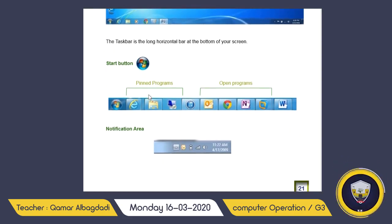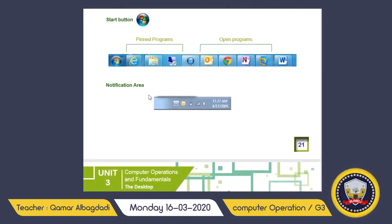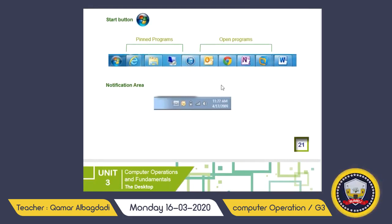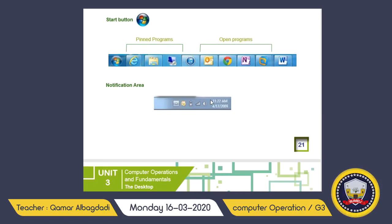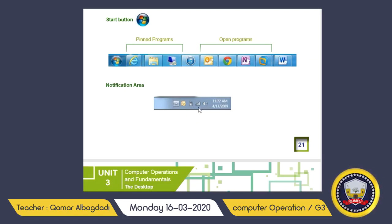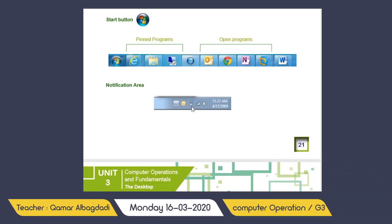You all know what the start button is — once you click it, many programs will open for you. The notification area shows the time and the date, and it also gives information about your computer such as the sound, the Wi-Fi signal, and the battery charging status.